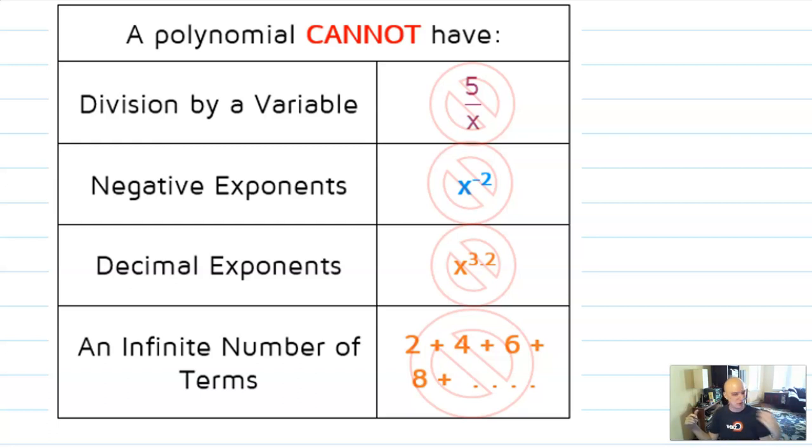And you do have to have a finite number of terms. You can have as many terms as you want. You could have a hundred, a thousand, you could have a million terms. But it has to be finite. So those are the rules for polynomials.